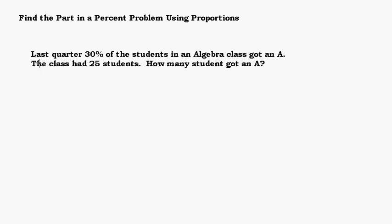In this problem, we have that last quarter, 30% of the students in an algebra class got an A. The class had 25 students. How many students got an A? So the first thing you need to recognize is that it is the part that we're looking for. In simple type percent problems, in your basic percent problems, you're going to have three numbers that you're looking for, which is the percent, the part, and the whole.